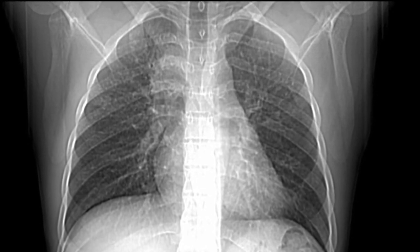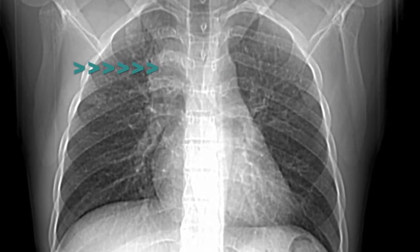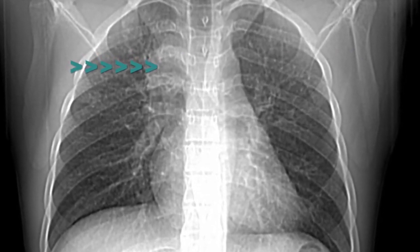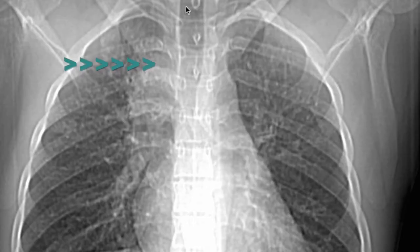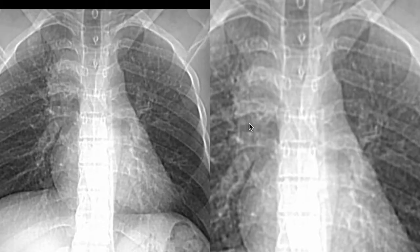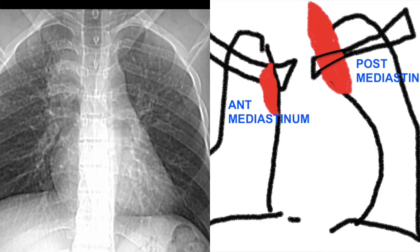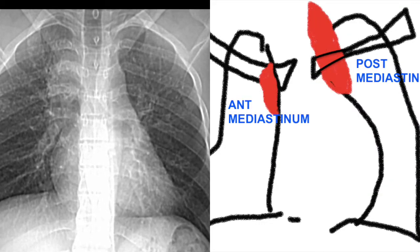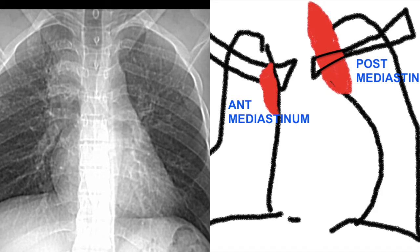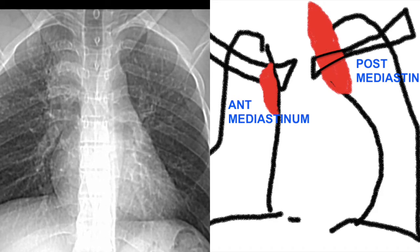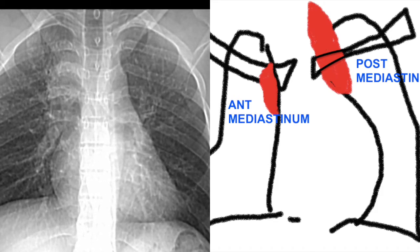We can see firstly a soft tissue density shadow seen in the right paratracheal region. This is likely to represent a paratracheal lymph node. If we look at the paratracheal soft tissue shadow very carefully, we can see that it is getting limited at the upper border of the clavicle. In fact, the upper part of this lesion ends at the clavicle.